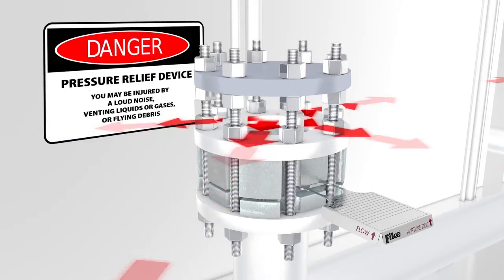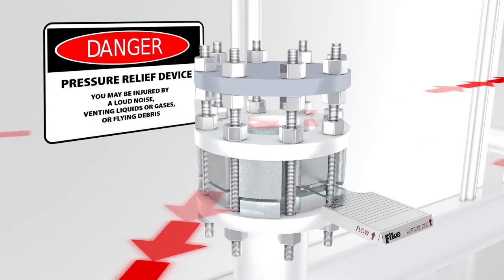FIKE provides a danger sign with all rupture disc shipments, and it should be placed in a conspicuous location near the zone of potential danger. Keep the sign clean and unobstructed for ease of viewing.